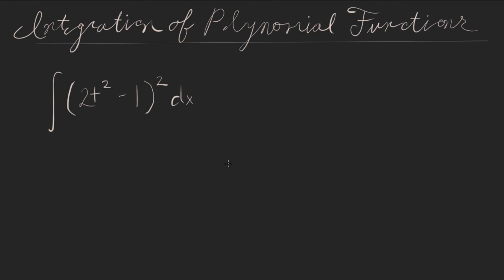Let's say we're looking to find the integral of 2t squared minus 1 squared. For a problem like this, you can't just jump in and just start separating. The best approach would be to foil this out.